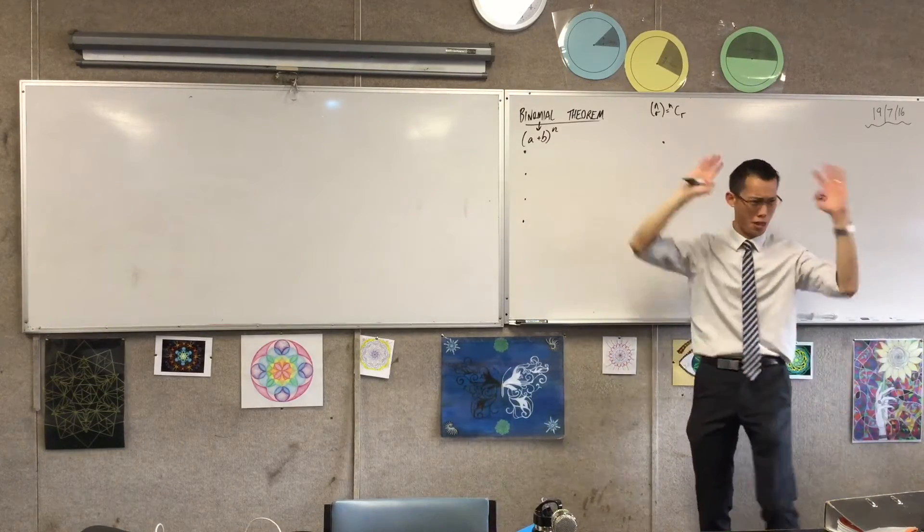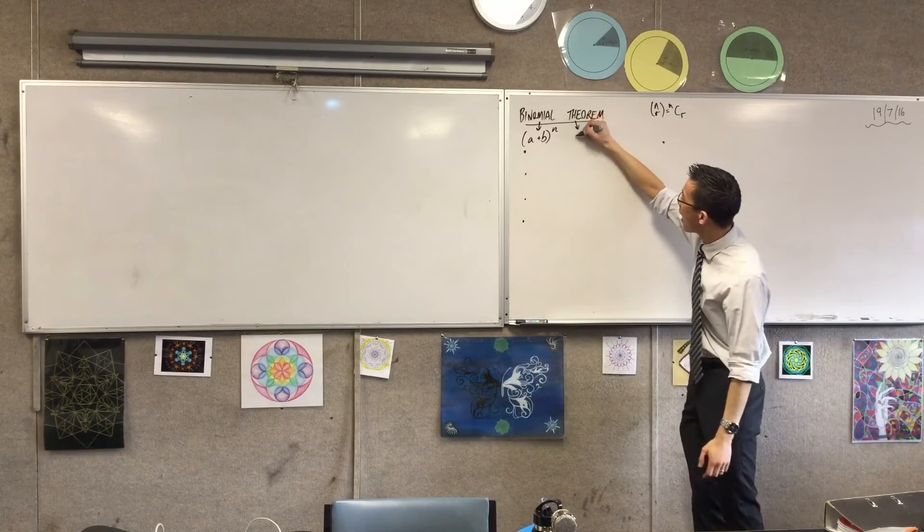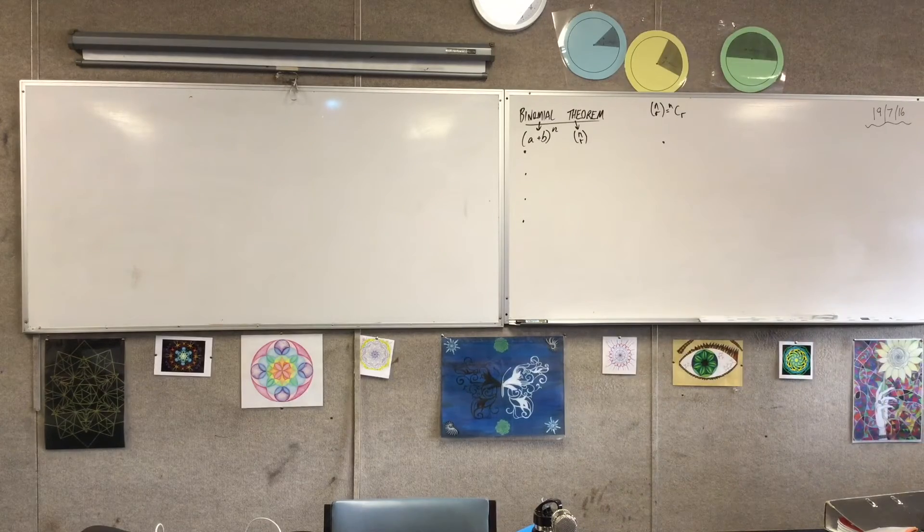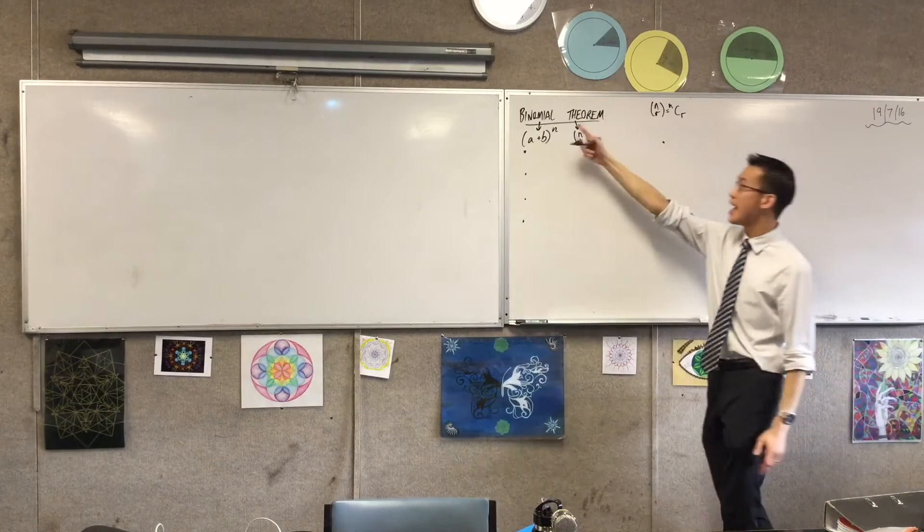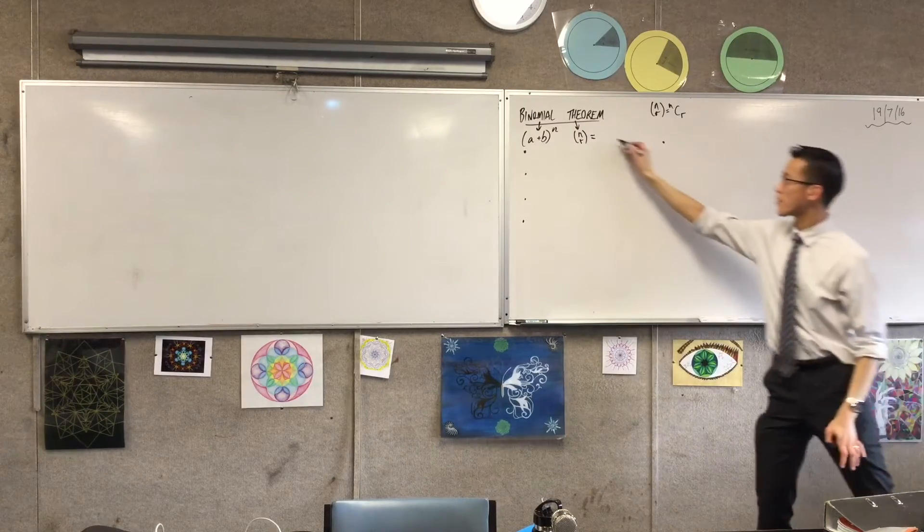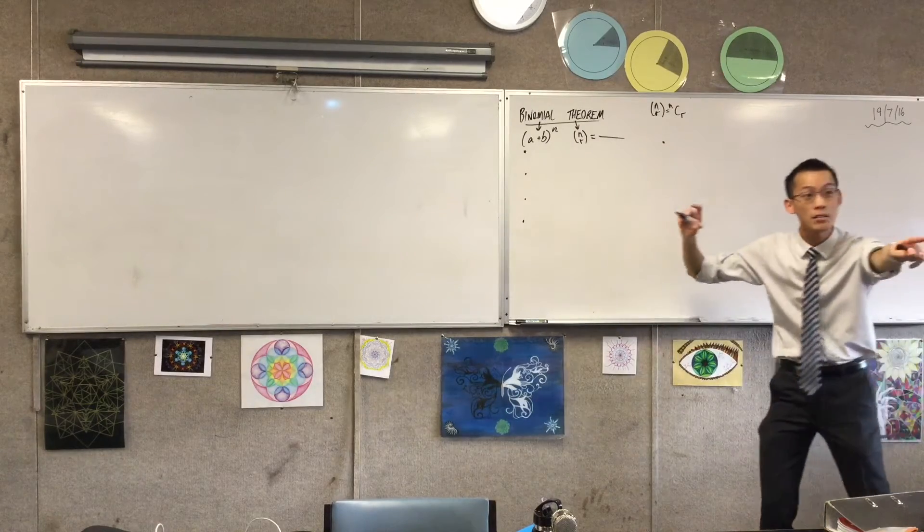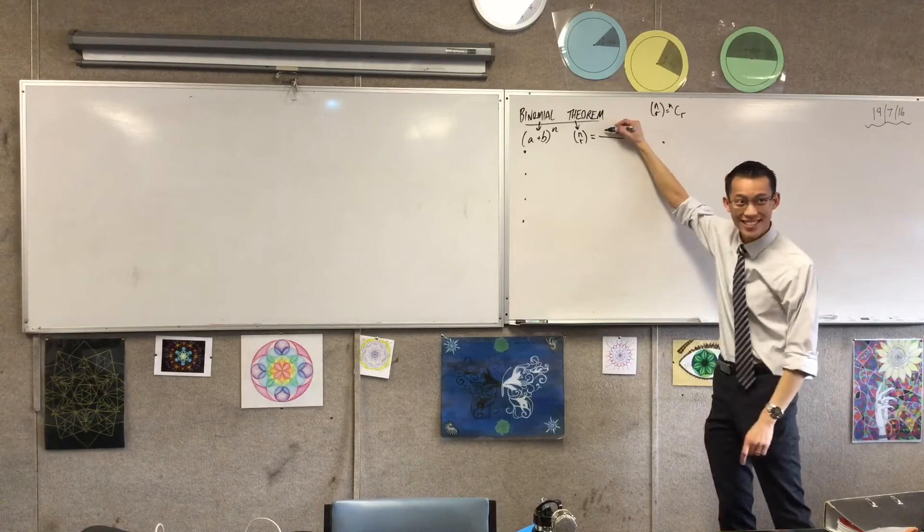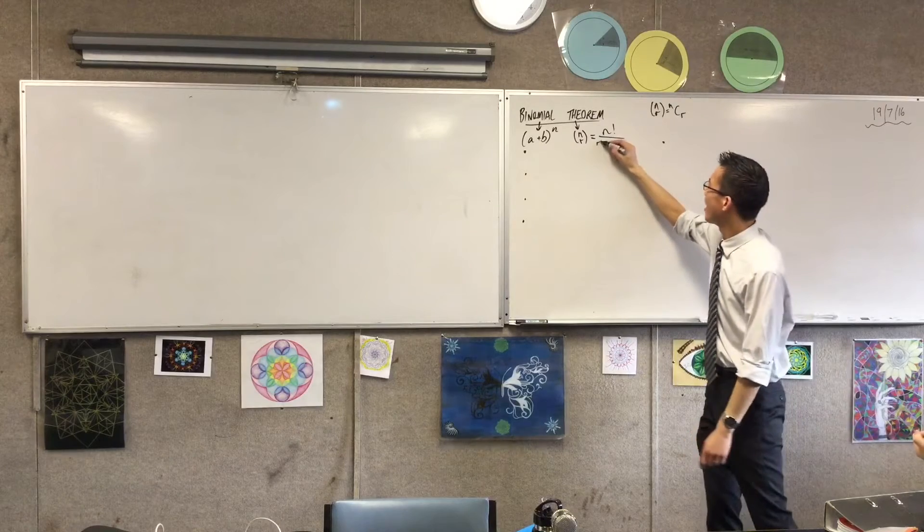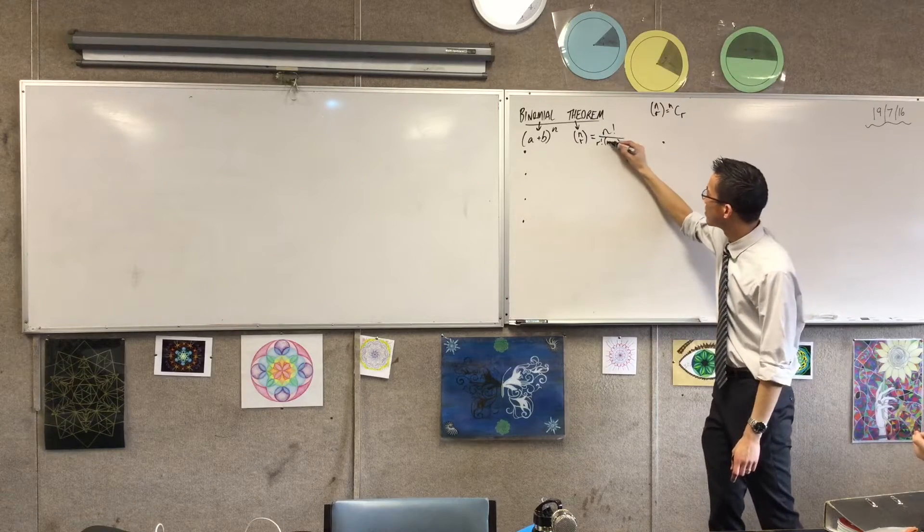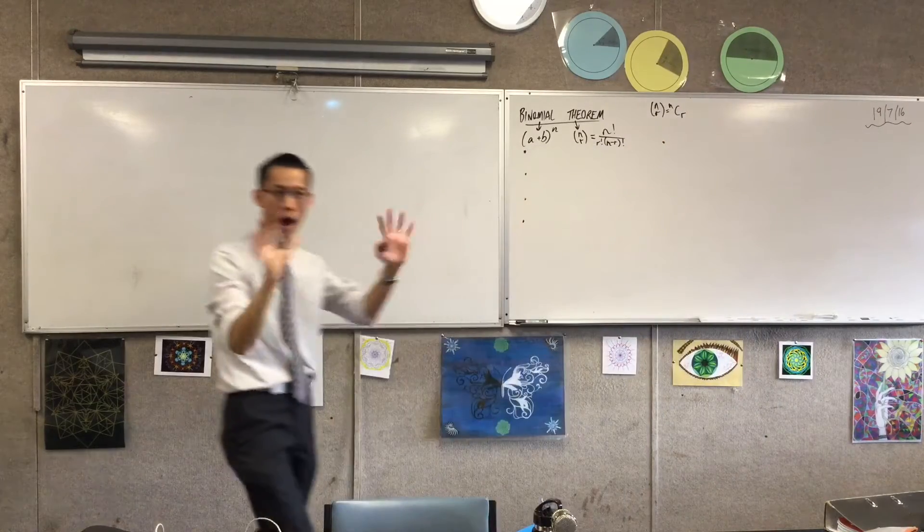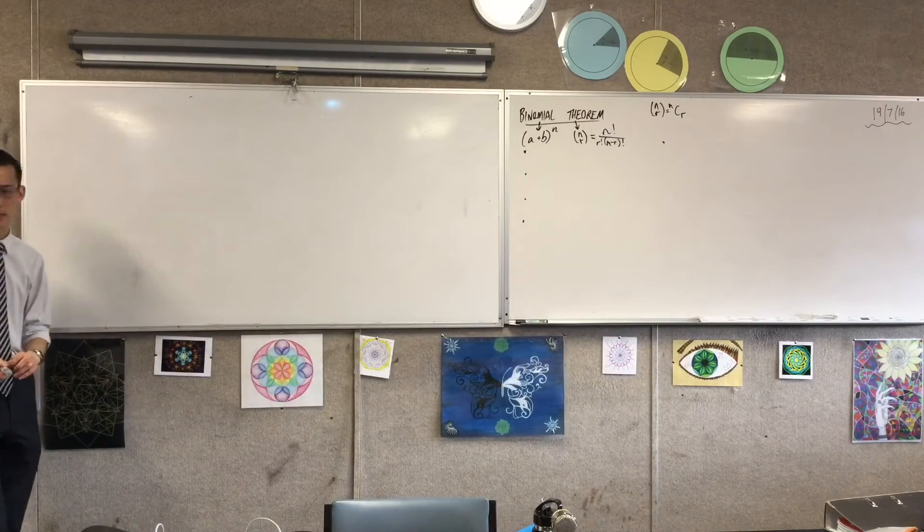And we came up with the binomial theorem, that the R, as in R-T-H, the R coefficient in something raised to the power of N is equal to, now, does anyone remember in factorial notation what it is? It's a fraction. N factorial, yeah, over R factorial N minus. Very good, okay. So this is the binomial theorem after which this topic is named, okay?